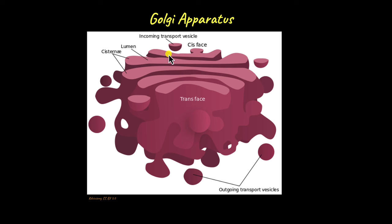The cis face acts as the docking station for incoming transport vesicles. These vesicles contain proteins and lipids from the ER. These vesicles come and fuse at the cis face of the Golgi apparatus. Once they fuse with the Golgi apparatus at the cis face, the contents of the vesicles are released into the Golgi apparatus.